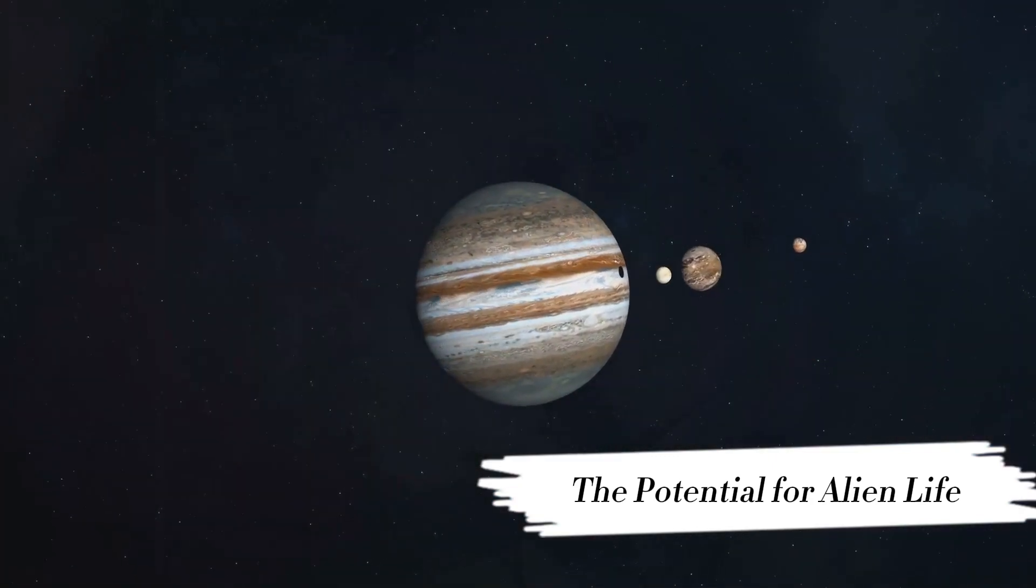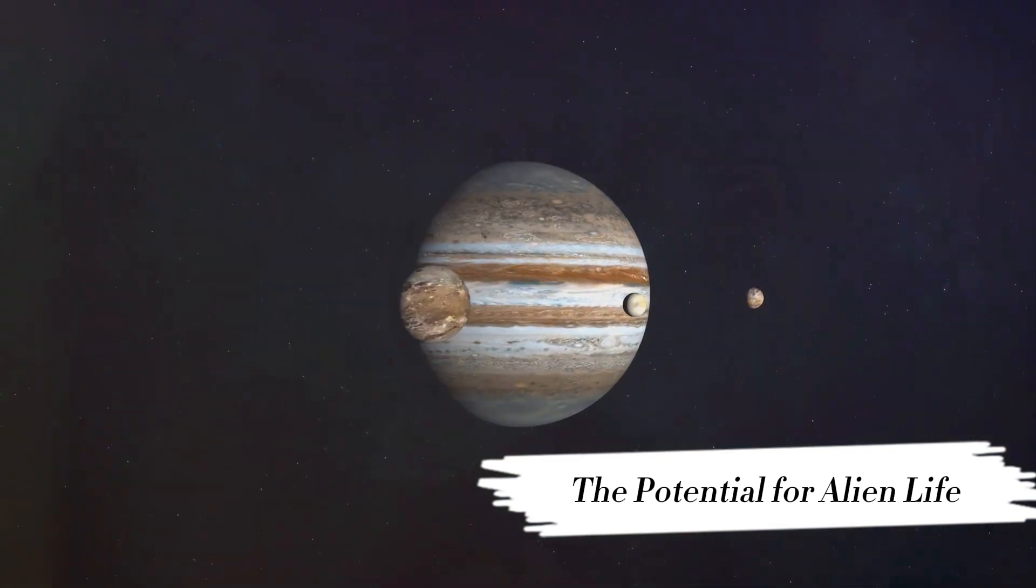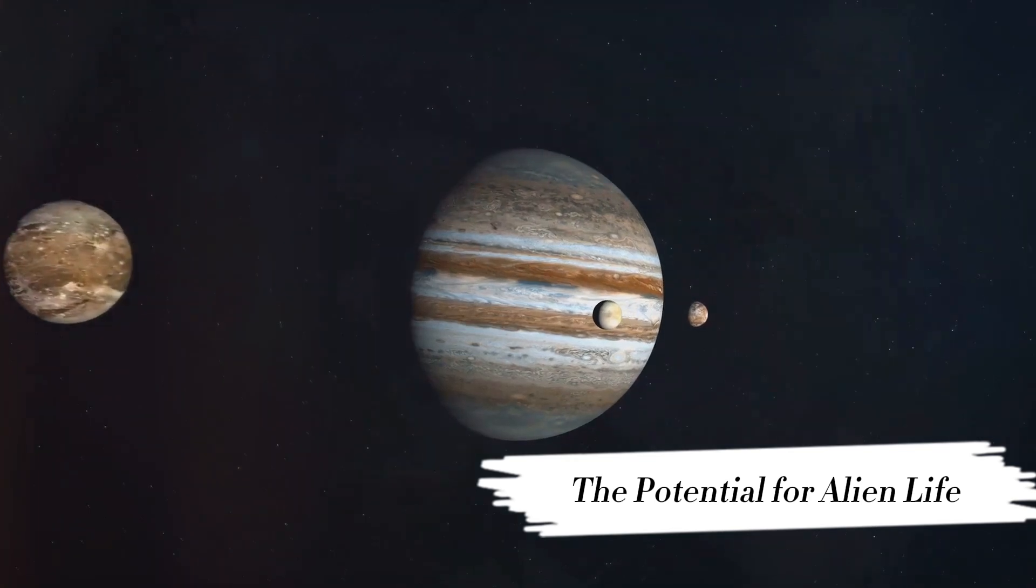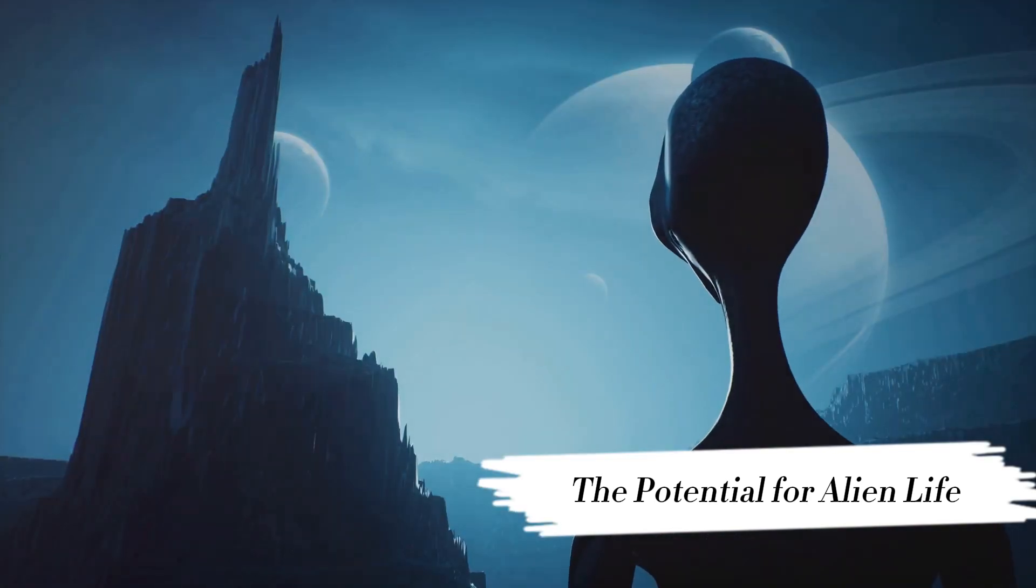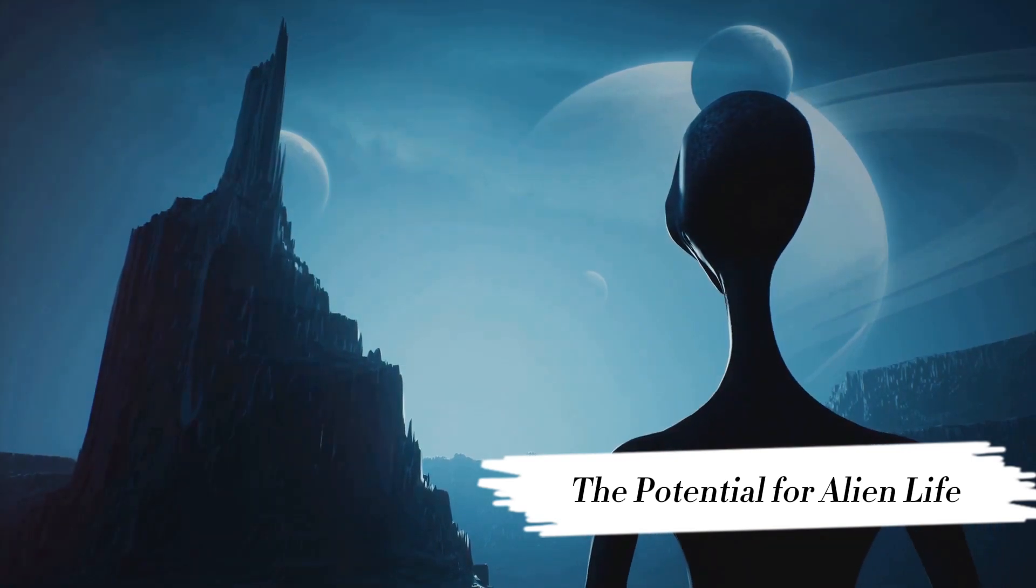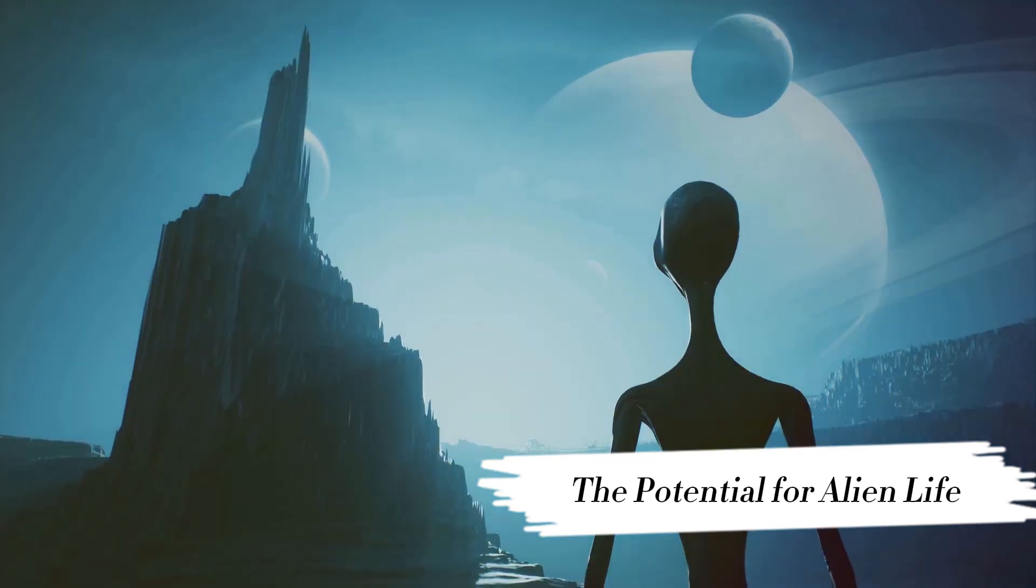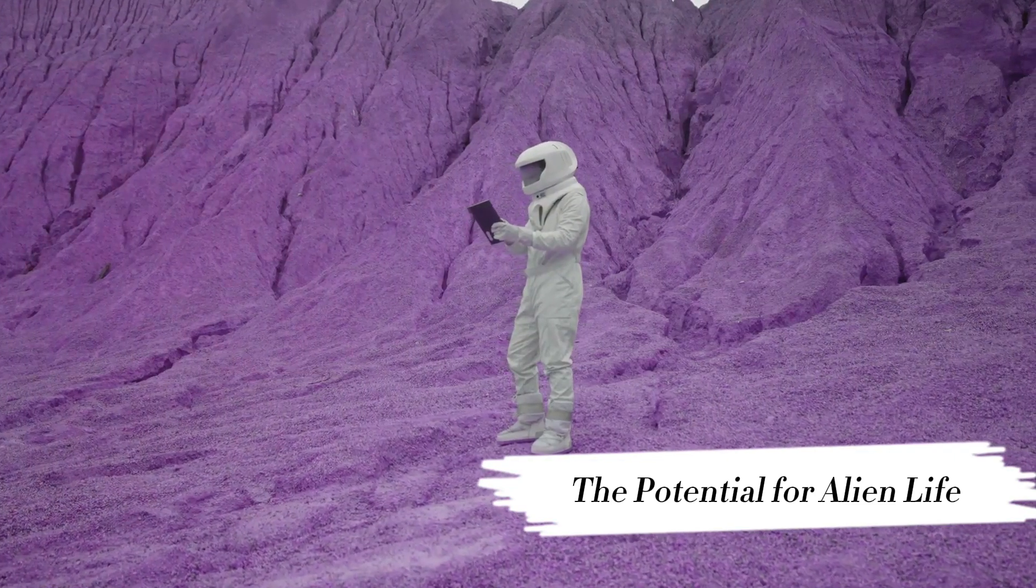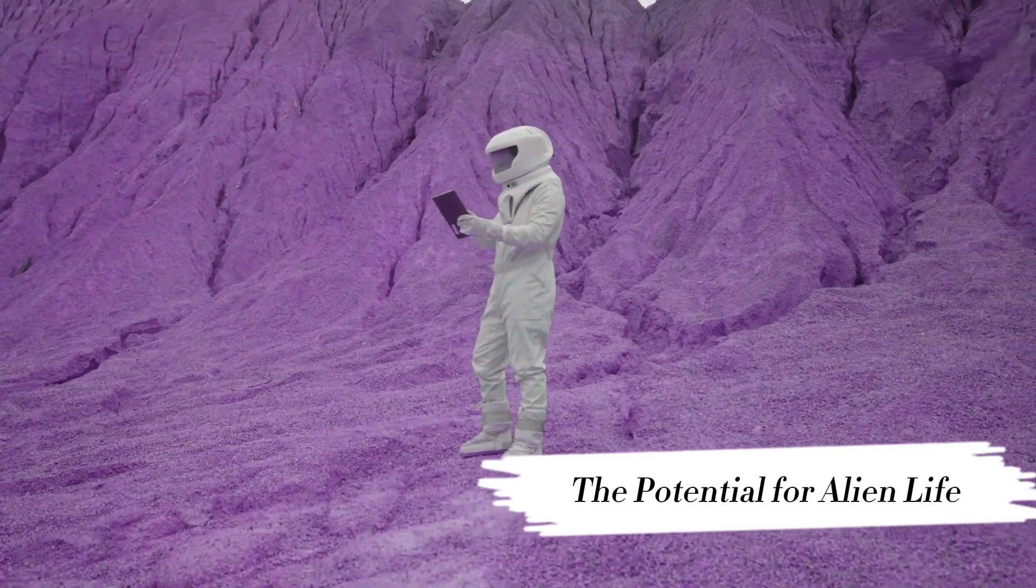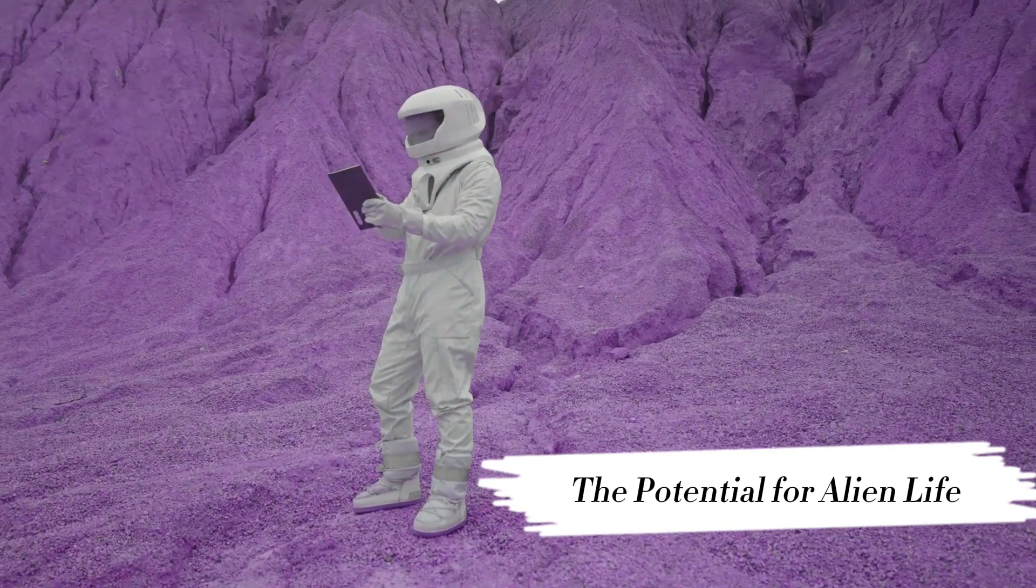For instance, life may exist on the icy moons of Jupiter and Saturn, where oceans of liquid water churn beneath thick layers of ice, heated by the gravitational pull of their parent planets. The implications of finding alien life are profound. It would fundamentally change our understanding of life itself. It would suggest that life is not a unique phenomenon, but a common occurrence throughout the universe. It would force us to reconsider our place in the cosmos and the nature of existence itself.